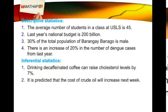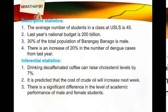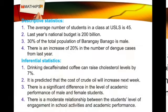One example of inferential statistics is a prediction: it is predicted that the cost of crude oil will increase next week. Another example: there is a significant difference in the level of academic performance of male and female students. And finally: there is a moderate relationship between students' level of engagement in school activities and academic performance.